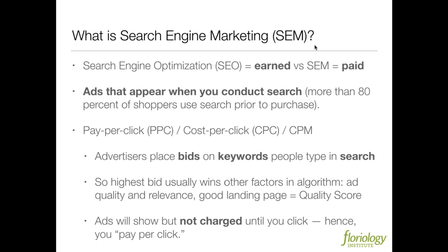Search engine marketing is called a lot of different things. Most people call it pay-per-click or PPC. You've also probably heard it called cost-per-click or CPC. Another way: it's not just about clicks nowadays — a lot of search engine marketing services allow you to buy impressions, meaning just shows on search results, and they call that CPM, which means cost per 1,000 impressions. That's what the M stands for.